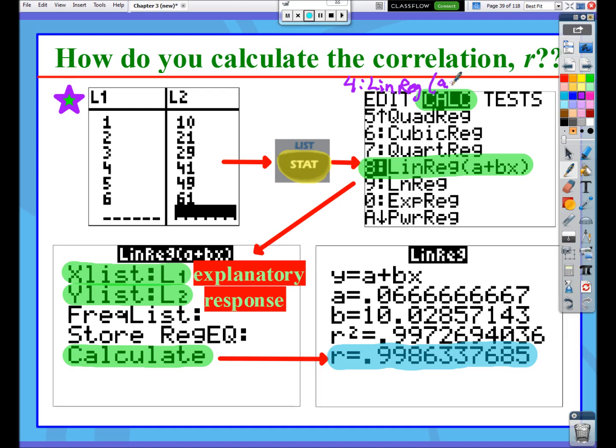But it says AX plus B. And there's really not that much difference between what number 4 and number 8 does. It just switches what it considers A and B to be opposite things of each other. For whatever reason, we predominantly like to use in AP Stats this LinReg A plus BX. So I will always recommend choosing option number 8.